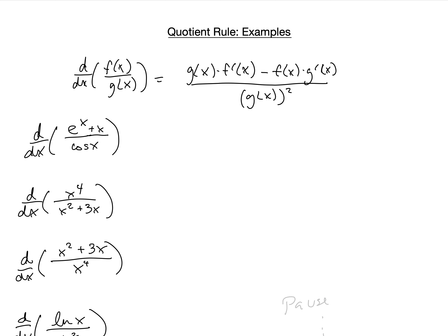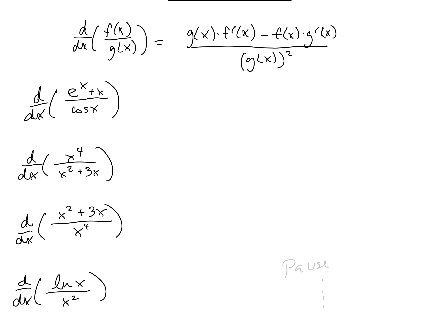For many of these examples, we will use the quotient rule, but if there's ever a situation where you could simplify and take the derivative more easily without the quotient rule, certainly feel free to do that. Our derivatives are: the derivative with respect to x of (e^x + x)/cos(x), the derivative of x^4/(x^2 + 3x), the derivative of (x^2 + 3x)/x^4, and the derivative of ln(x)/x^2.